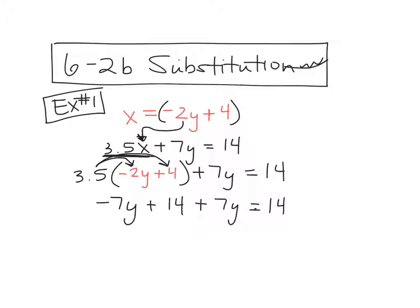So 3.5 times negative 2 is a negative 7y. 3.5 times 4 is a positive 14 plus 7y equals 14. From here, it's algebra. It's the simplifying of your setup. So negative 7 plus 7, we're going to combine. Now, here's the deal. I feel like a lot of people, when the y's or the variables are on the same side, they still try to move it over by doing the opposite.